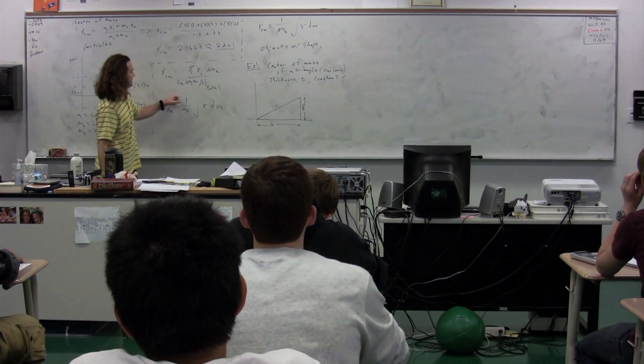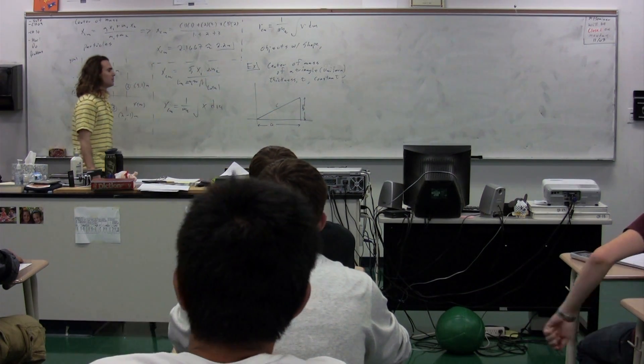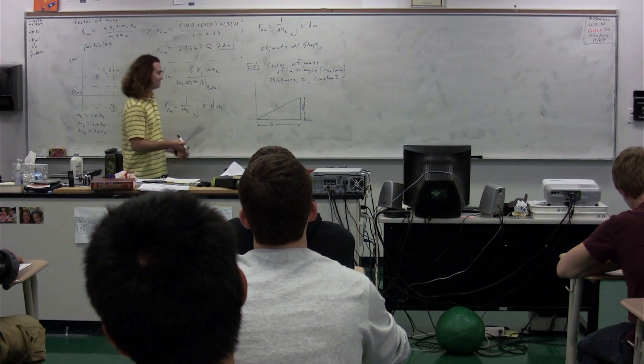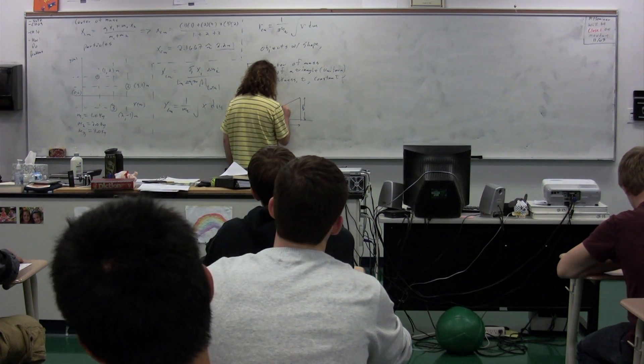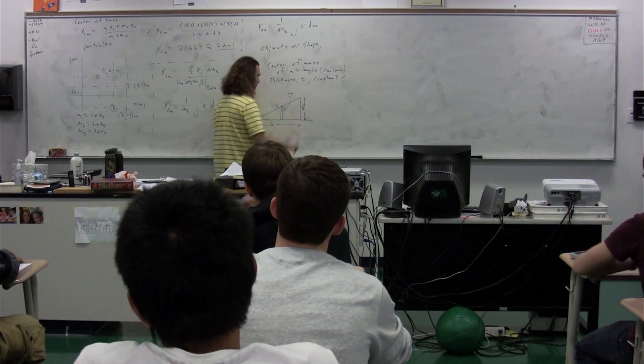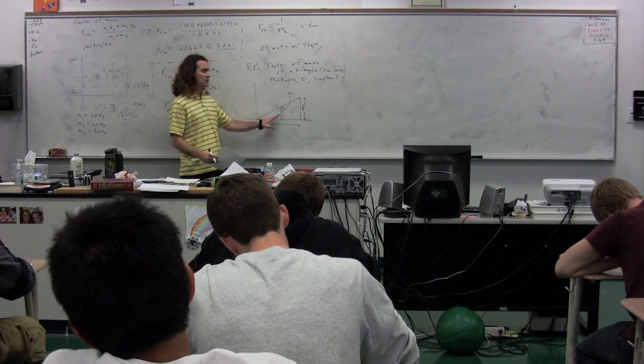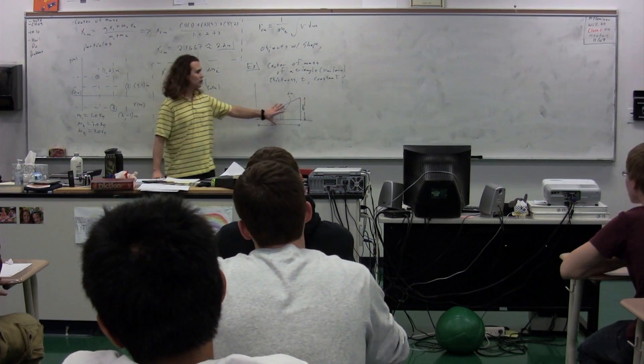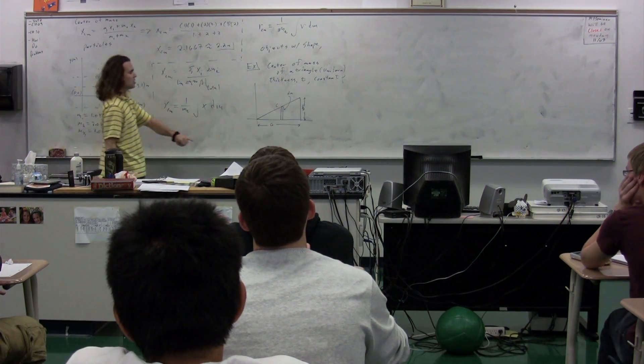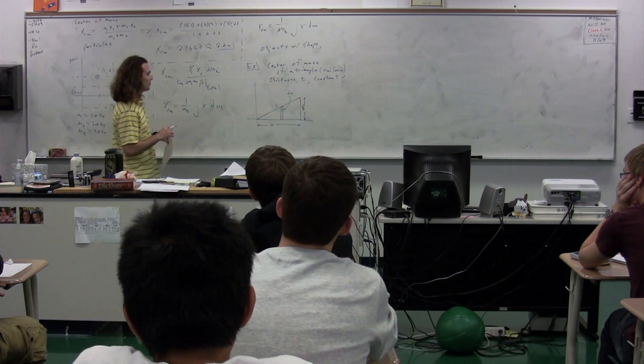Now, we are going to split this triangle into infinitesimally small pieces, and there will be an infinite number of them. And they're each going to have a name, dm. So dm is a rectangular box. The shape of the triangle itself is a triangle with a thickness T. But little dm, if we have an infinite number of these, is going to be actually a rectangular box.